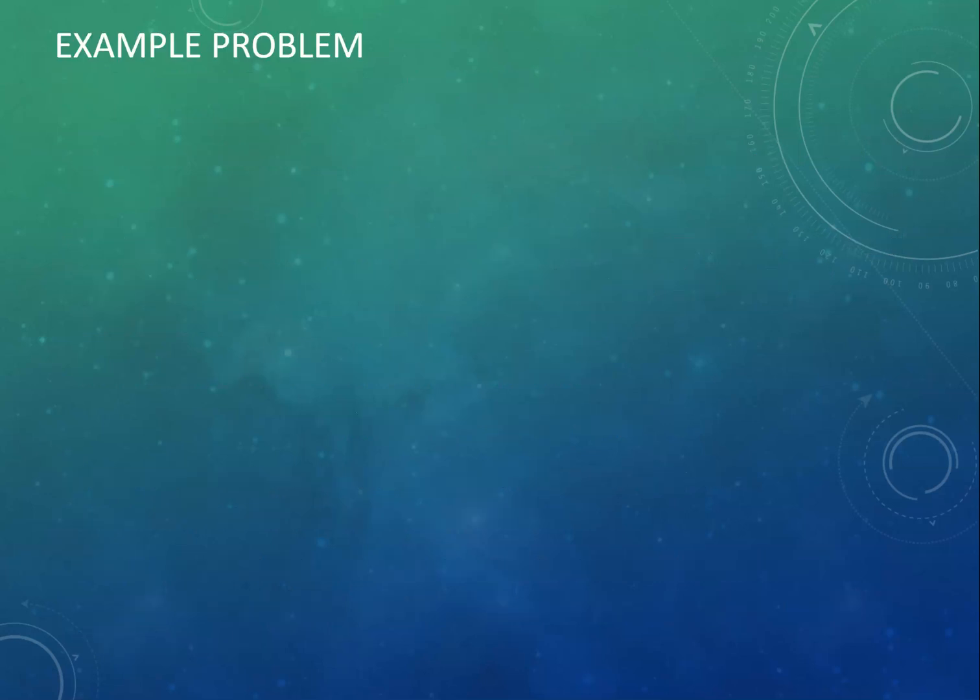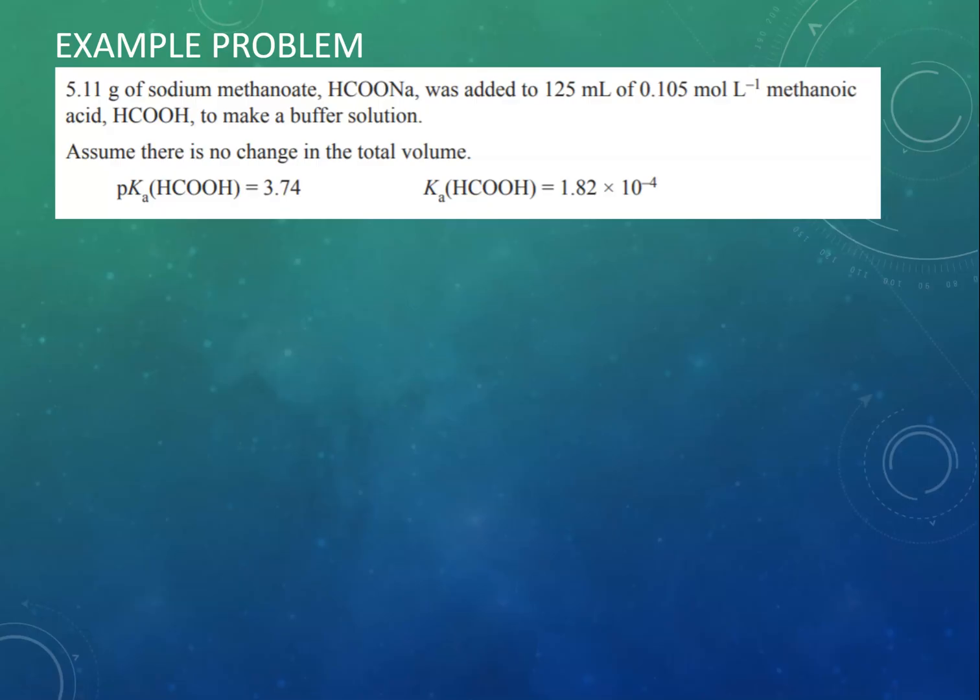Here's a problem from one of the old NCEA exams where 5.11 grams of sodium methanoate, HCOONa, is added to 125 mL of 0.105 mol L⁻¹ methanoic acid, HCOOH, to make a buffer solution. We're given the Ka and the pKa of the methanoic acid. In this case we need concentrations. We've got a concentration of methanoic acid but we do not have a concentration of sodium methanoate. We've only got a mass so we need to work out a concentration first.